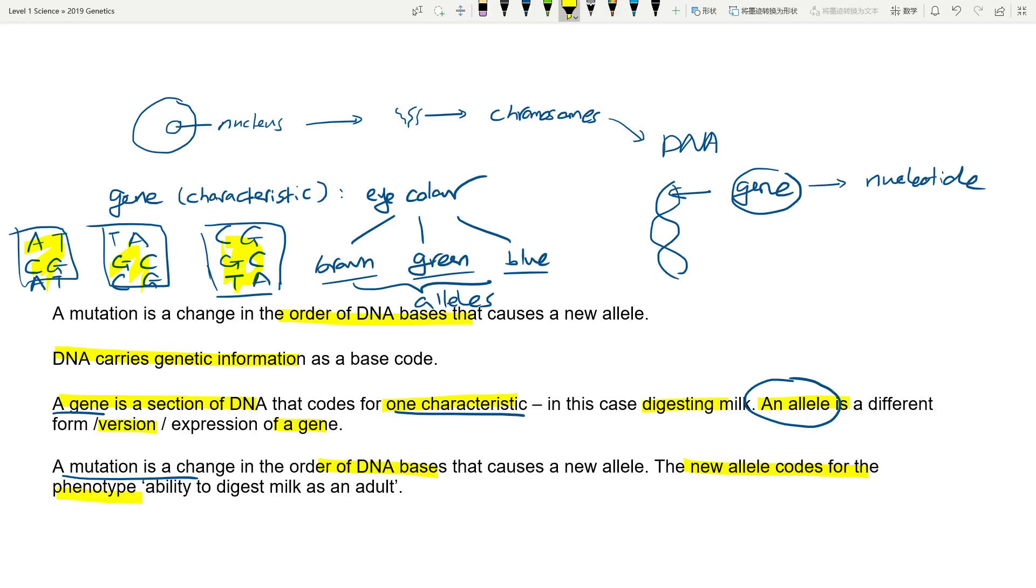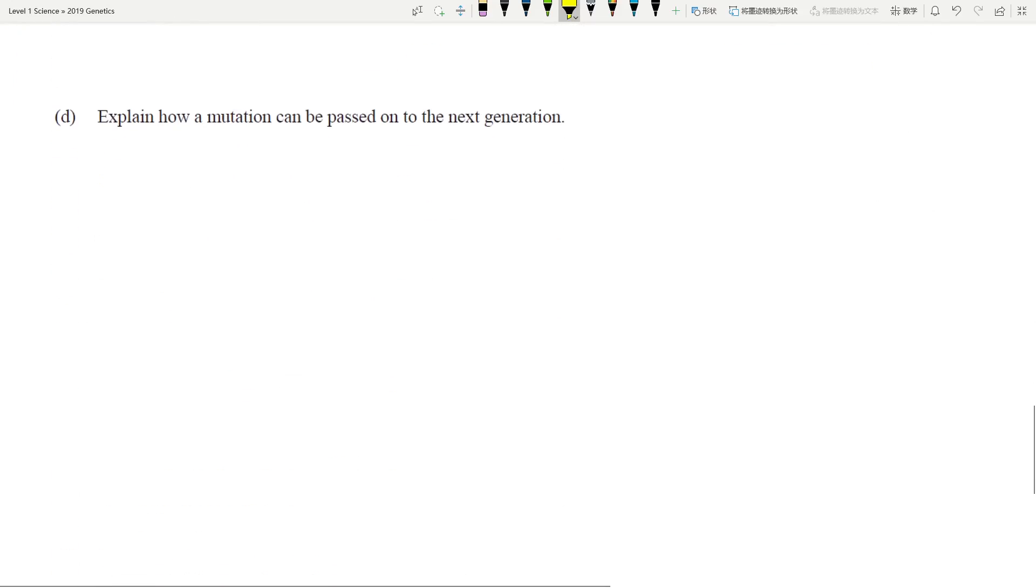In this case, the new allele codes for the phenotype ability to digest milk as an adult. This is a very typical question in the exam. They ask you to define what gene, chromosomes, alleles, phenotype, genotype - all of the definitions. You just have to rote learn them. There's no other way. You have to understand what they are and then apply them in the question like this.